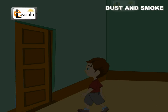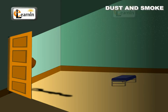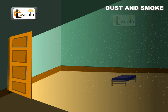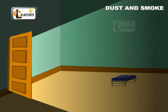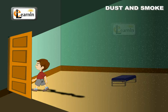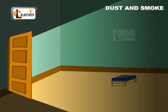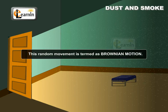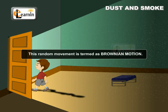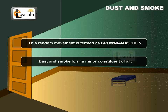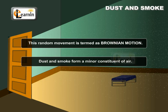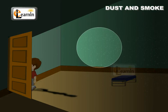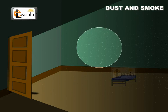He opened the front door slightly to allow a thin beam of light. He observed that this thin beam of light highlighted the presence of many dust particles in the air, which were continuously in motion. This random motion is termed as Brownian motion. Dust and smoke form a minor constituent of air, and the amount of dust and smoke in the air varies from place to place.